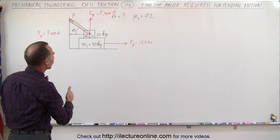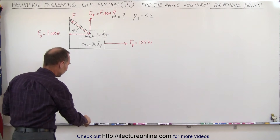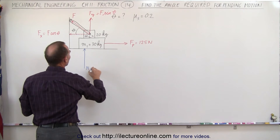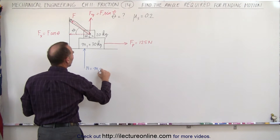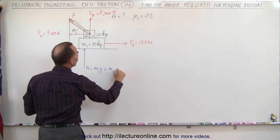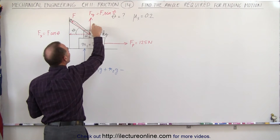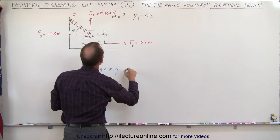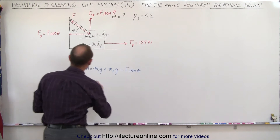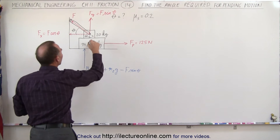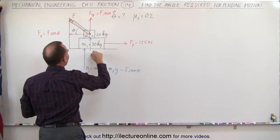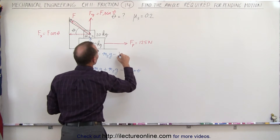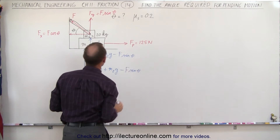We need to find all the normal forces. Normal force N1 is going to be equal to the weight of M1, that's M1g, plus the weight of the next block M2g, but minus the vertical component of the bracket force — because it reduces the normal force — so minus F·sinθ. Then the normal force between the first block and the second block, N2, equals M2g minus F·sinθ.